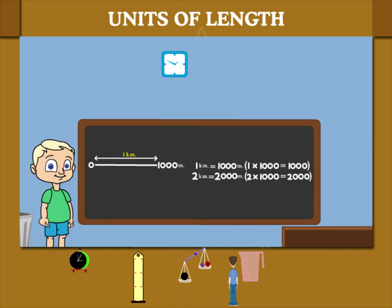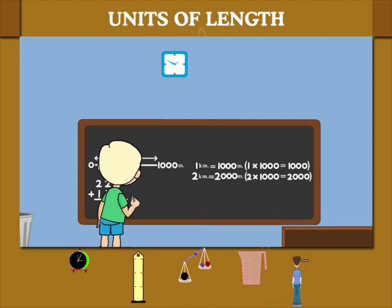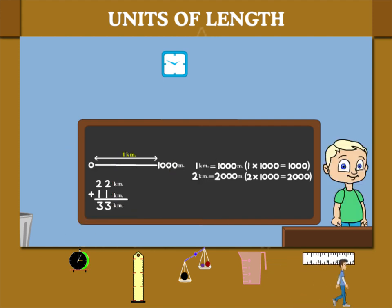If you add 22 and 11 kilometers, you get 33 kilometers.